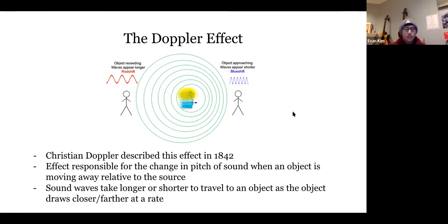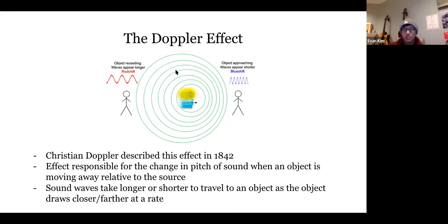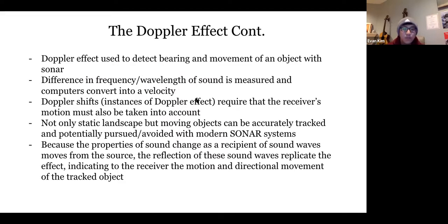The Doppler effect is the effect responsible for the change in pitch of sound when an object is moving relative to a source. Sound waves take longer or shorter to travel to an object as it draws closer or farther away. The farther you are from something, the longer it takes for sound to reach you. If you're moving away at a constant speed and continuously hear that noise, it's going to seem like the pitch is decreasing.